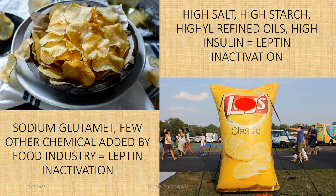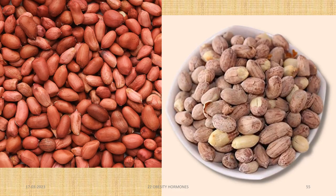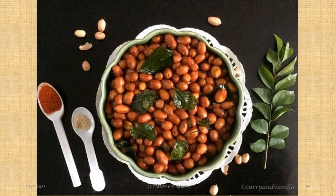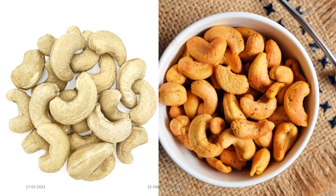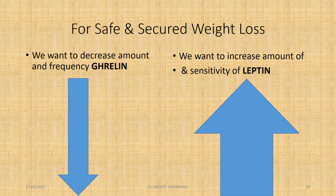If we eat homemade simple unsalted potato chips, we can hardly eat half a bowl. But company-made potato chips — we can eat almost a big bag. Similarly, raw groundnuts: we cannot eat more than half a fistful, but when salted and roasted, the satiety sensation never reaches the brain and we keep eating more and more. Salted and fried peanuts, and raw versus fried salted cashew nuts, are classic examples of leptin inactivation. For safe and secured weight loss, we want to decrease the amount and frequency of ghrelin, and increase the amount and sensitivity of leptin.